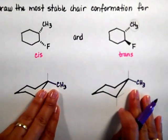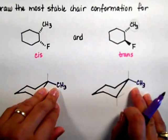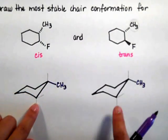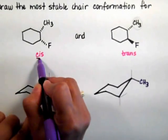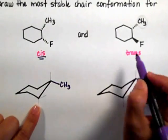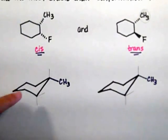Alright, so I have my methyl on my equatorial position, and now I have to put the fluorine atom on carbon number two, but I have to be very careful that I put them cis or trans depending on which isomer I'm talking about.